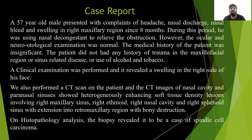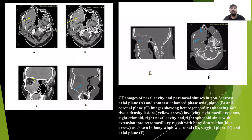Clinical examination revealed a swelling on the right side of the face. A CT scan was performed, with images taken in both non-contrast and contrast-enhanced phases in axial, coronal, and sagittal planes. These revealed heterogeneously enhancing soft tissue density lesions involving the right maxillary sinus, right ethmoid, right nasal cavity, and right sphenoid sinus, also involving the retromaxillary region with bony destruction.